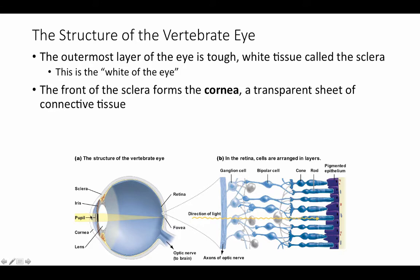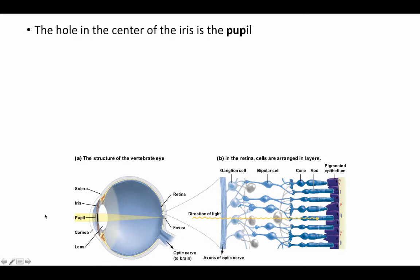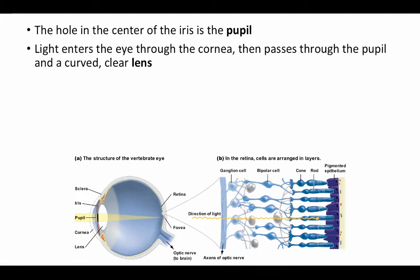Just inside the cornea is a pigmented, round muscle called the iris — the part of the eye responsible for your eye color. The iris can contract or expand to control the amount of light entering the pupil. The pupil appears to change size, but it's actually the iris that contracts away from it or relaxes into it to change the amount of light entering. The hole in the center of the iris is the pupil, and that's what admits light into the eye.